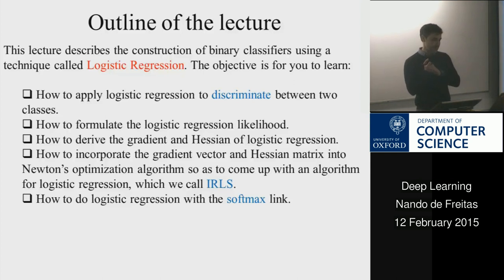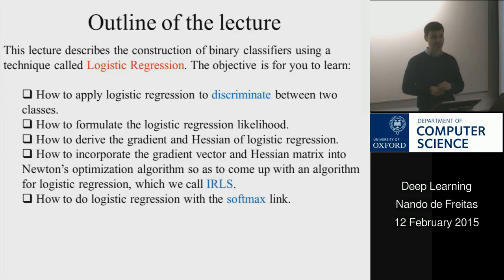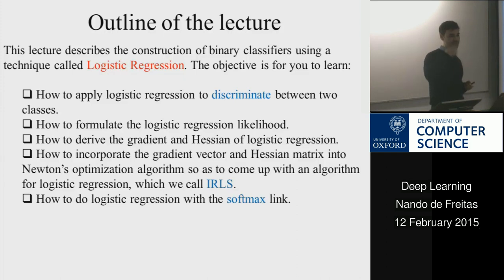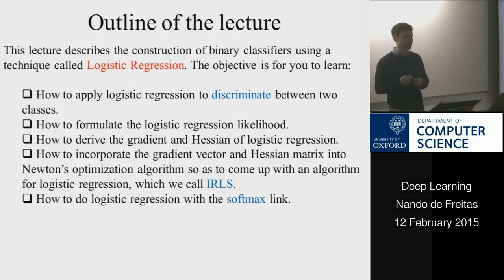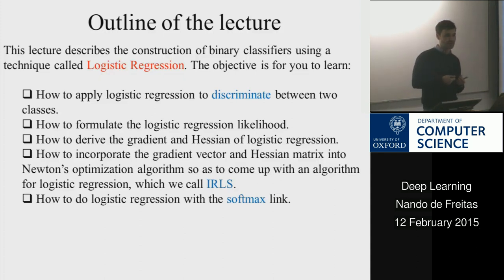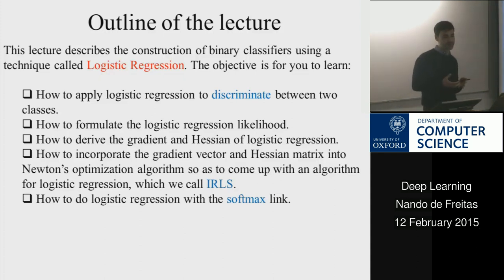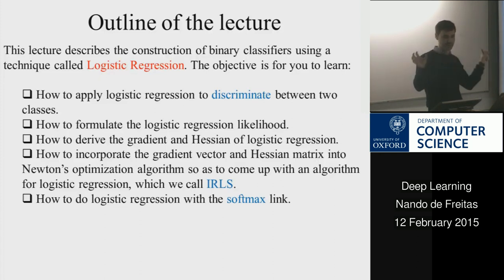So far we've been doing mostly functional approximation efforts, where you do regression — trying to map inputs to outputs where the output is a continuous variable. Now we're going to do something categorical. In particular, we're going to take inputs and decide whether the inputs are of one class or the other. So we're going to discriminate between things.